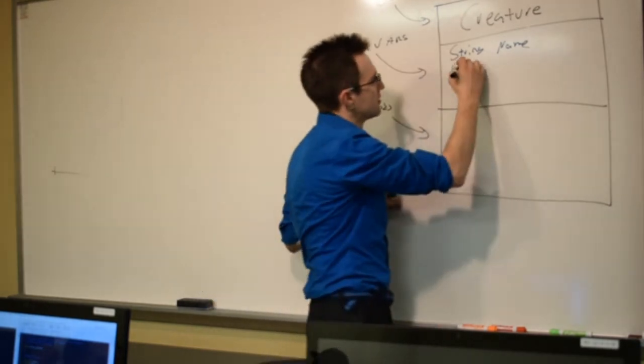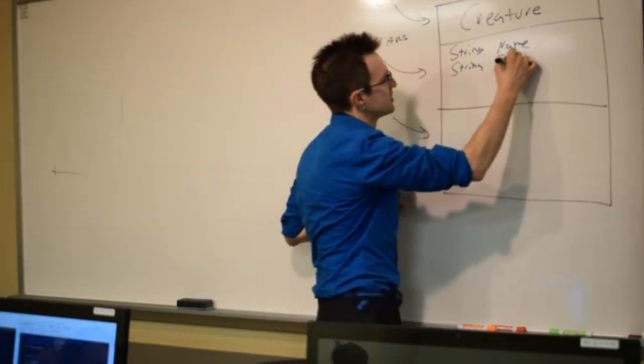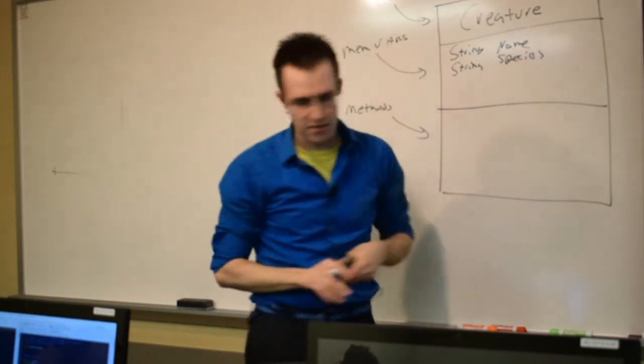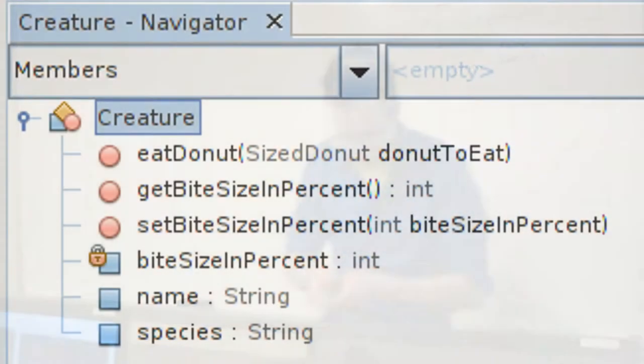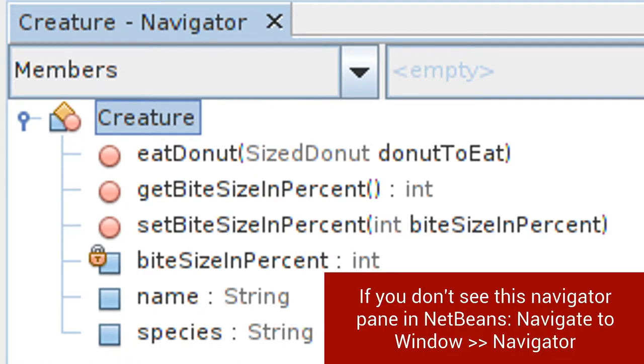Once again, if you get a job coding, you will get things like this. And they will say, make me this class. If you have a fun job, they'll let you do that. And then you have to go and code it. So it knows its name. What else do our creatures know? It knows its own species.